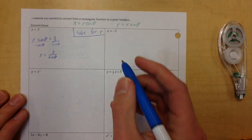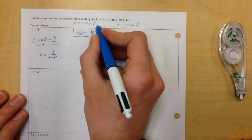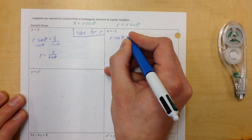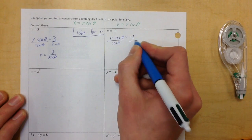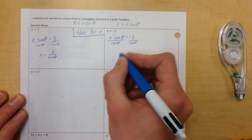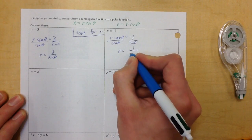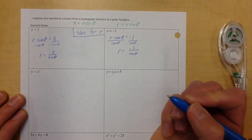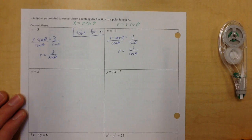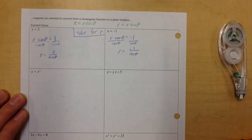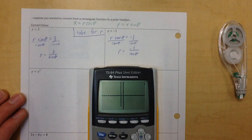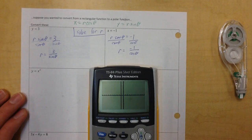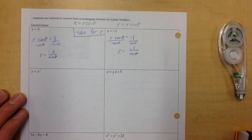The next one is almost the exact same idea. We're going to take x out and replace it. So r cosine theta = −1. Divide by cosine theta on both sides, and r = −1/cos θ. If you wanted to verify, type negative one divided by cosine of theta in the calculator — there it is, a vertical line.